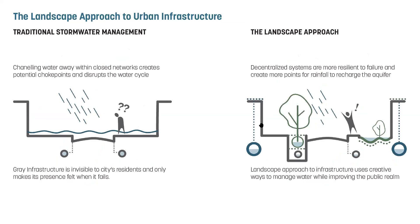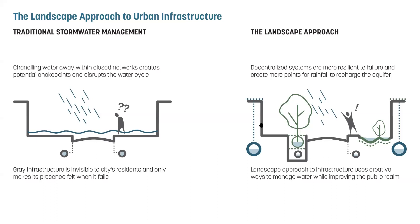Traditional stormwater infrastructure is a huge portion of municipal investment and cost, and the only time citizens register these infrastructures is when they fail. We are talking about a different landscape approach that actually brings these infrastructural systems forward by integrating landscape elements in the form of trees and detention basins. We also have to start understanding the different basins within which urbanization is taking place—the urban footprint has reached the CMDA boundary, but we need to think about the impacts as the city expands forward into undeveloped areas. Some of the reasons the Adyar river overflows during floods is because many upland areas that used to be green are no longer green.